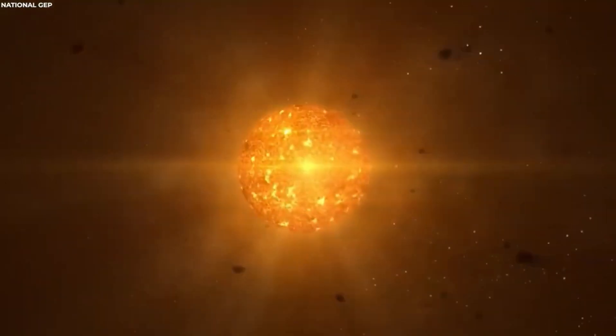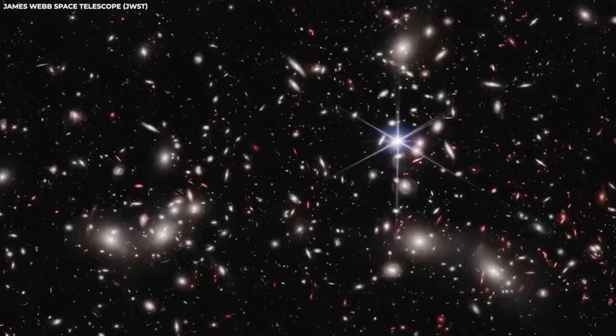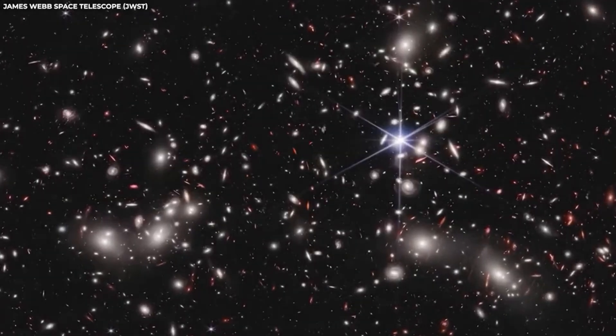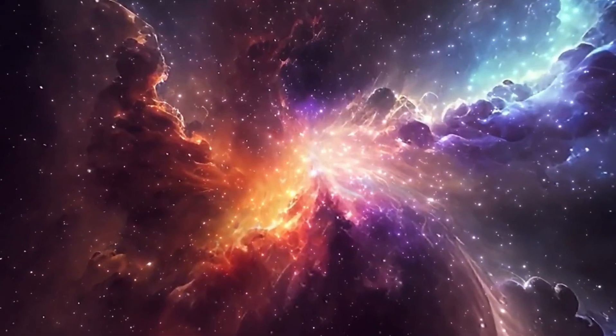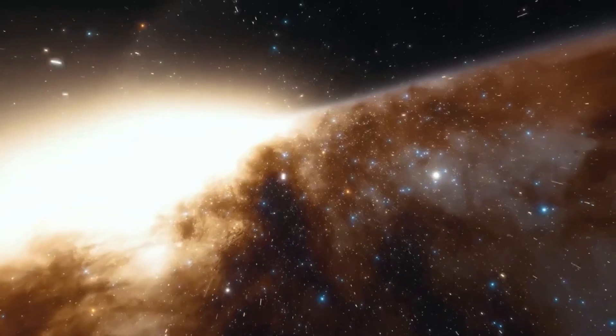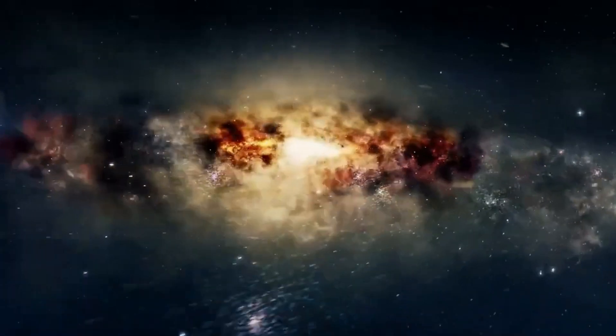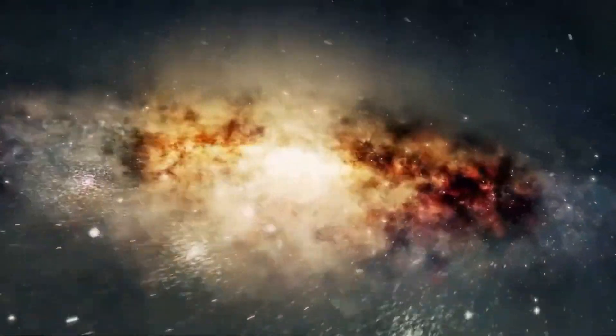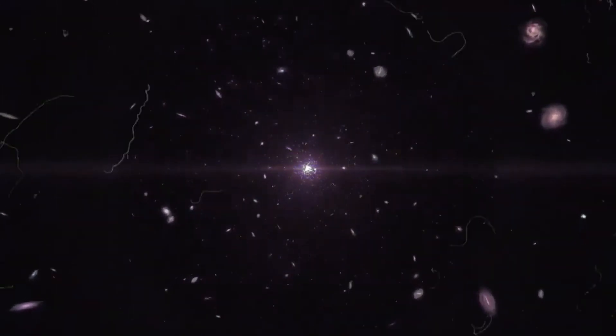The NGC 346 houses protostars, clouds of gas and dust in space that are developing into stars. Previous infrared studies of the star cluster have focused on protostars heavier than about five to eight times the mass of our sun. With Webb, we can probe down to lighter weight protostars as small as one-tenth of our sun to see if their formation process is affected by the lower metal content, said Olivia Jones, STFC Webb Fellow at the UK Astronomy Technology Center.